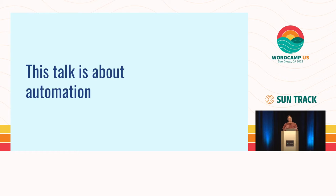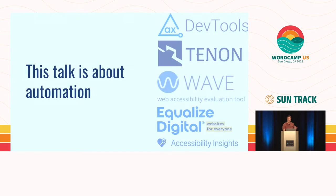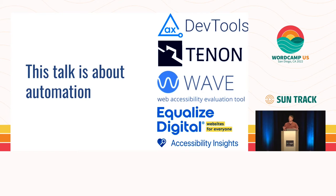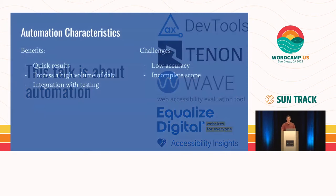Automation is something that gets talked about in the accessibility world frequently in only a negative light, and that's because automation can really only detect approximately 30% of types of accessibility errors. But that ability to detect errors is still really crucial. When we talk about these six errors, all of the automated tools can find them. They are universal, simple, and objective, so using automation to find them is going to save you a lot of money and effort.